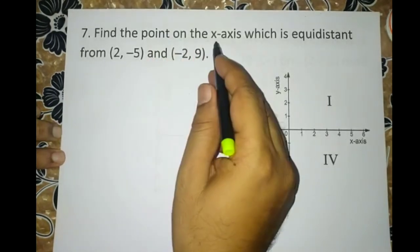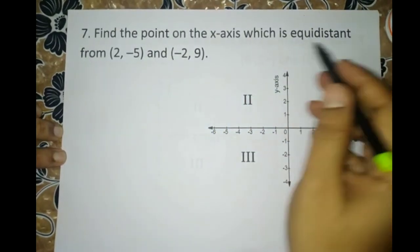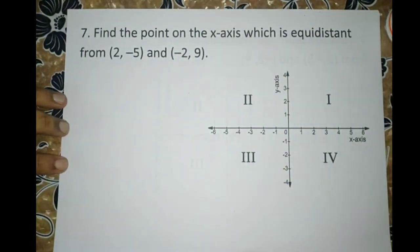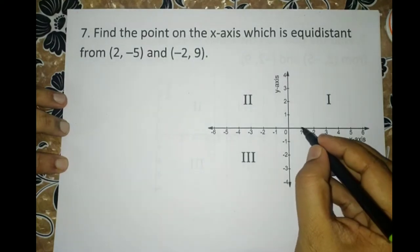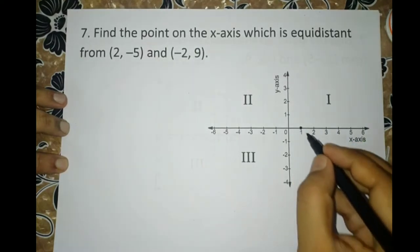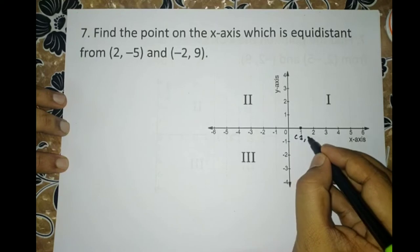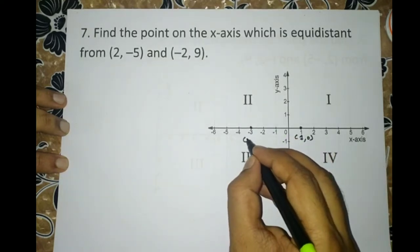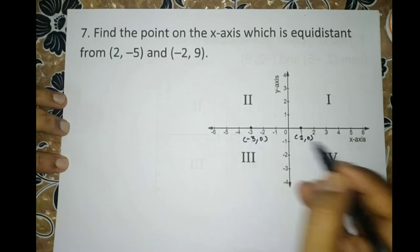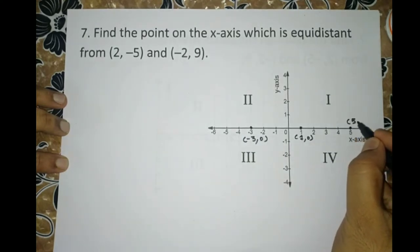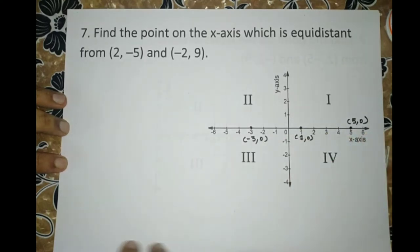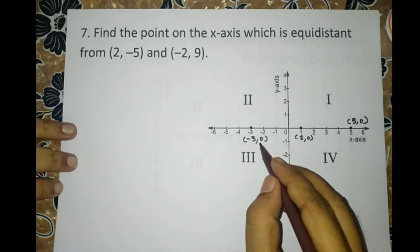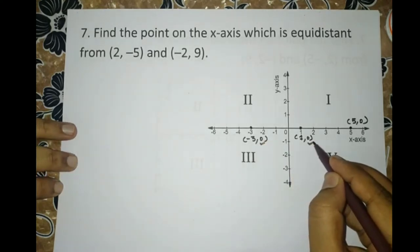Question number 7, kids. This I am going to solve. It says, find the point on the x-axis. Now let us see what type of points are on the x-axis. This point A, we know that it is 1, 0. This point will be minus 3, 0. And this point is 5, 0. So everywhere I can find one thing that the y-part is becoming 0. That is, ordinate is 0. Only abscissa is there.